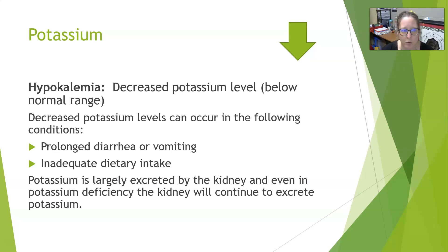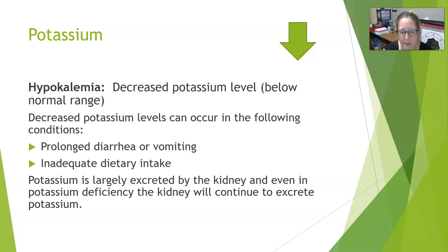Hypokalemia is a low potassium level below the normal range. Decreased potassium levels can occur in prolonged diarrhea or vomiting, where potassium is lost through loss of fluids, and in inadequate dietary intake. Generally we get plenty of potassium from a variety of fruits and vegetables. Potassium is largely excreted by the kidney — there is not a good mechanism to conserve or reclaim potassium because we usually get plenty of it, so there is usually no need for conservation.